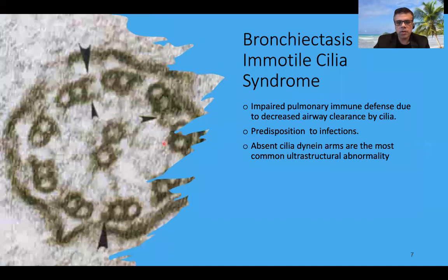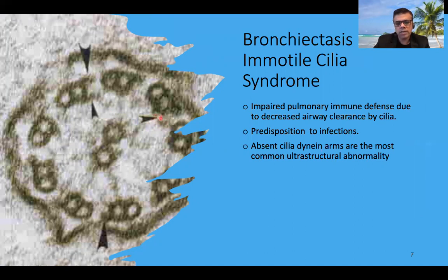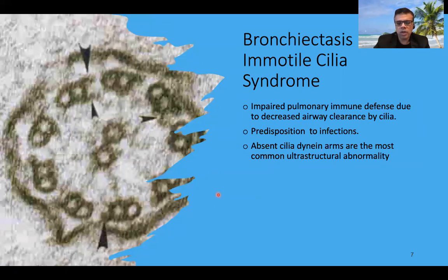As shown by the arrowheads in this image, the absence of the dynein arm leads to immotile cilia, which results in improper clearing of bacteria. This leads to superimposed infection and subsequently bronchiectasis.